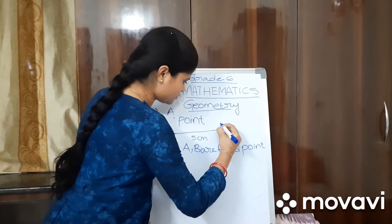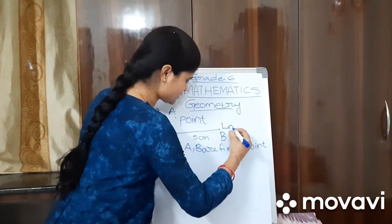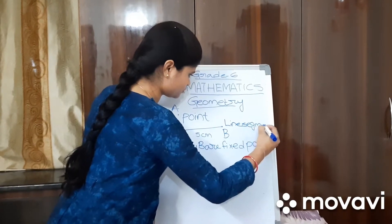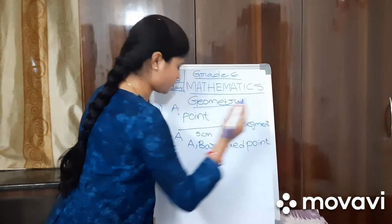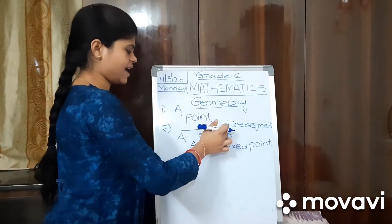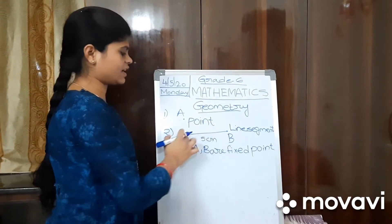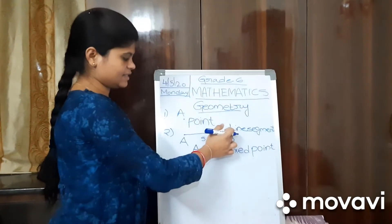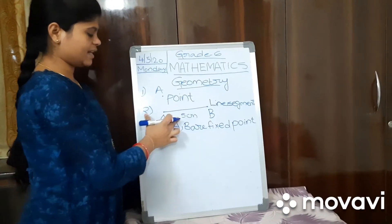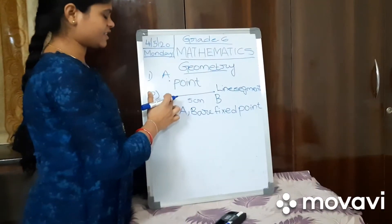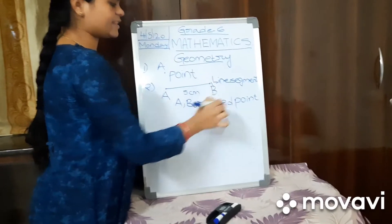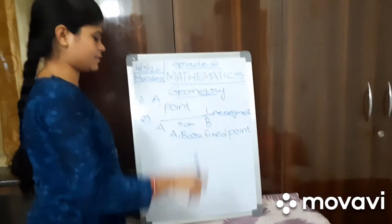Fixed points means if this line segment is 5 centimeters, it will always be only 5 centimeters — we cannot extend it more. A line segment has two fixed points, so we cannot extend them. This is called a line segment.